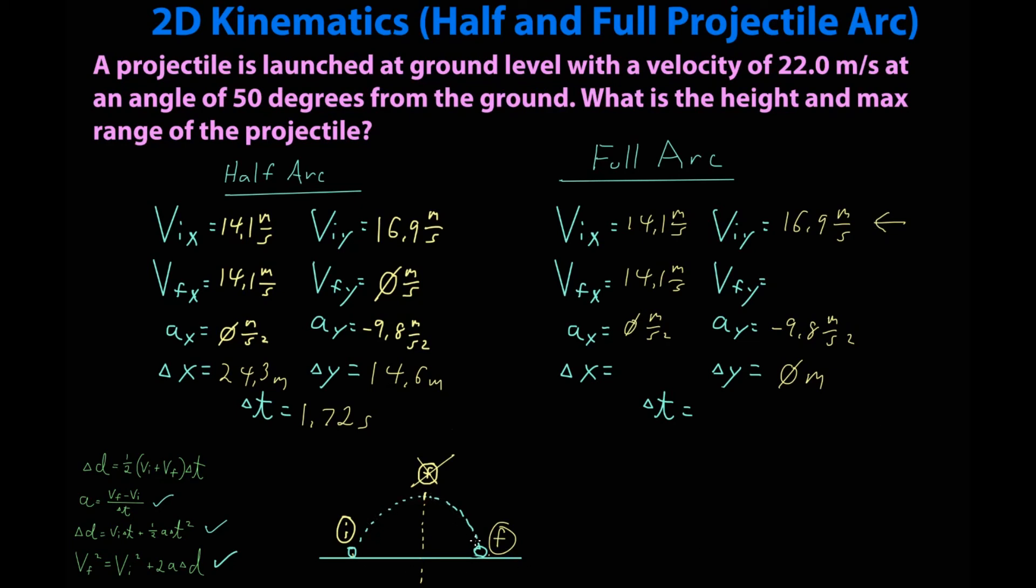Therefore VFY is downward and the same value: negative 16.9 meters per second. Is there anything else I can get pretty easily? Well yes there is.